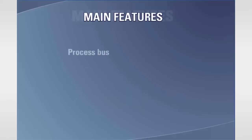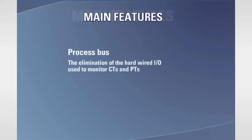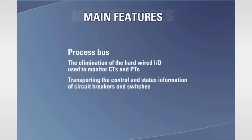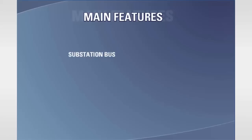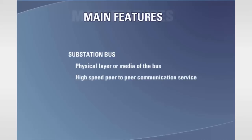IEC 61850 has also defined a process bus. The long-term objective of this bus is the elimination of the hard-wired IOUs to monitor CTs and PTs, in addition to transporting the control and status information of circuit breakers and switches. Now that we have an overview of IEC 61850, we'll focus our attention on the following aspects of the substation bus which are pertinent to protective relaying: the physical layer or media of the bus, the high-speed peer-to-peer communication service, the client services, and the substation configuration language.